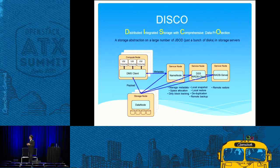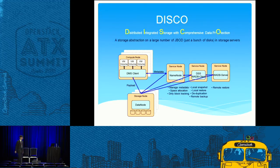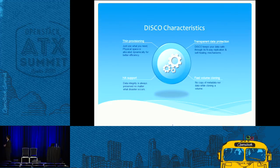This is DISCO — the Distributed Integrated Storage and Comprehension Data Protection. This is the architecture: we have the Compute Node with the DMS client that provides volumes to the VM. They talk to the name node as the metadata repository, and all payload requests are extended to the data nodes. The characteristics we provide for our DISCO solution include thin provisioning, HA support, transparent data protection, and fast volume cloning.